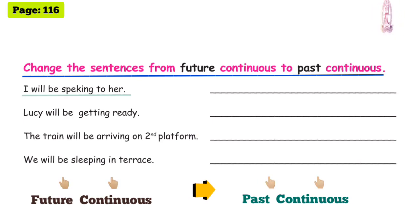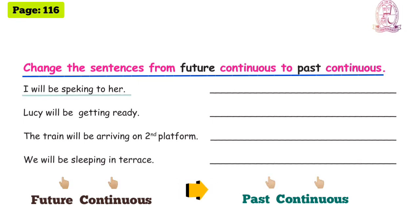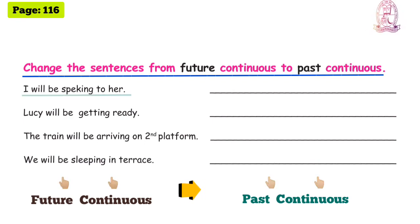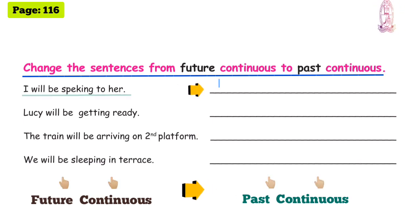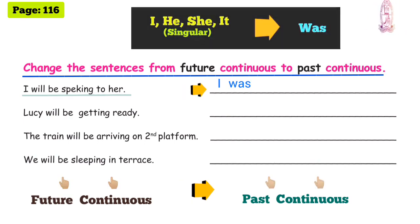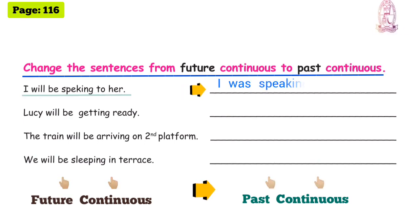Students, there is a spelling correction in the sentence. The word is 'speaking' — S-P-E-A-K-I-N-G. Past continuous tense: 'I was speaking to her.' Next sentence.